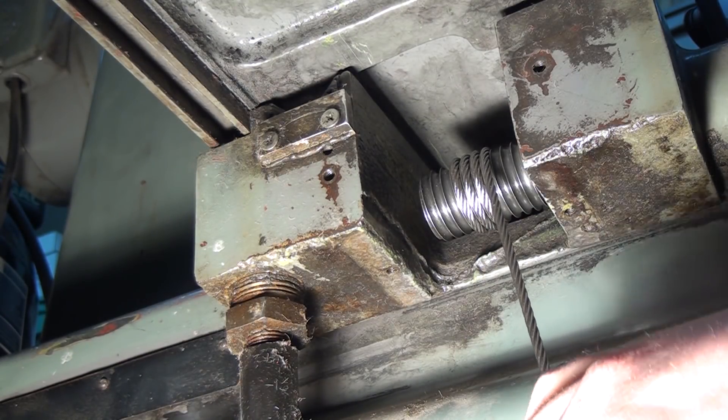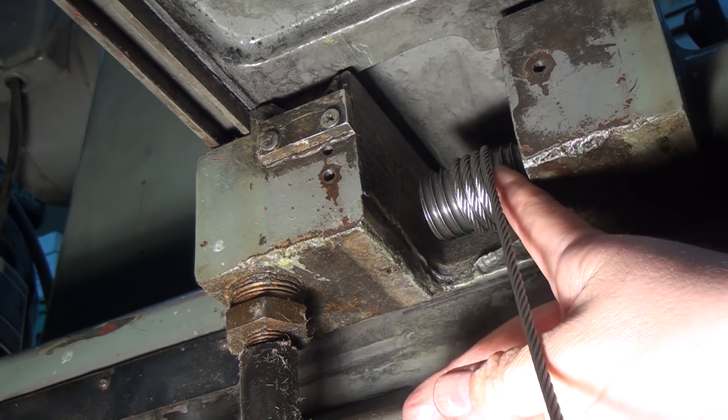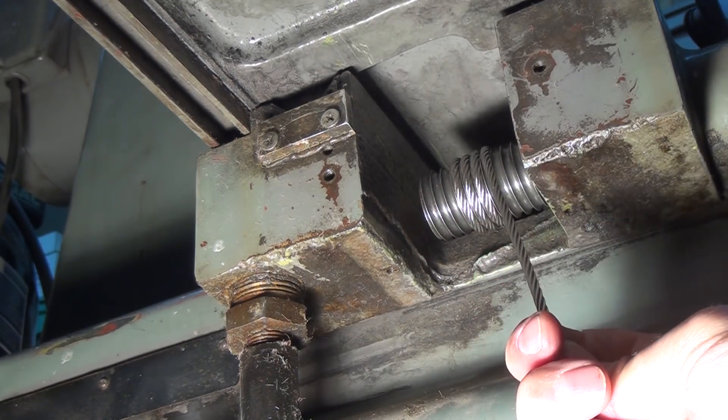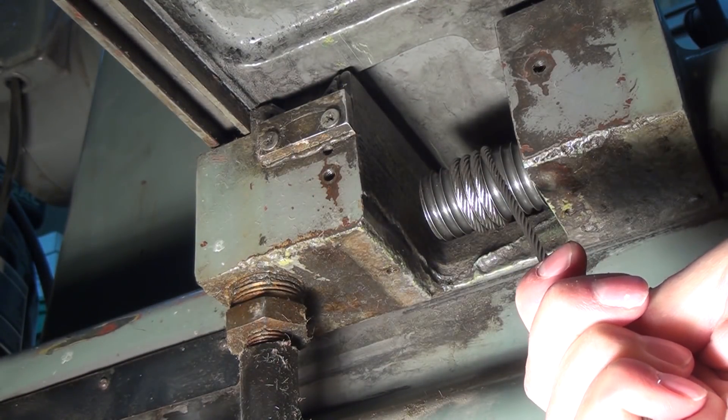So 5/32nds diameter cable ended up being perfect for the situation. And that's why I think a smaller cable maybe wouldn't work as well. It wouldn't make as much contact. Maybe you'd have to have more tension to get it to not slip. I'm not really sure.